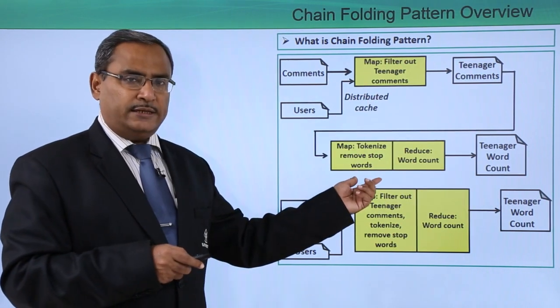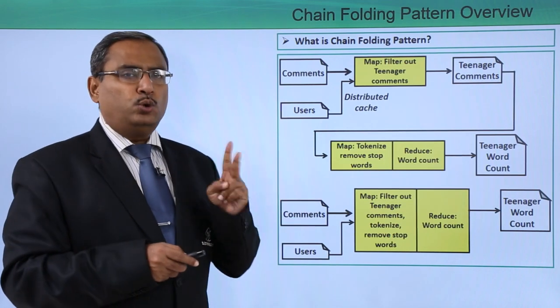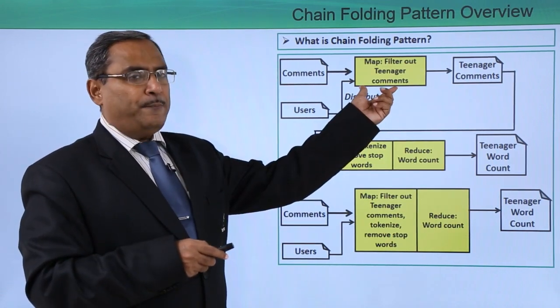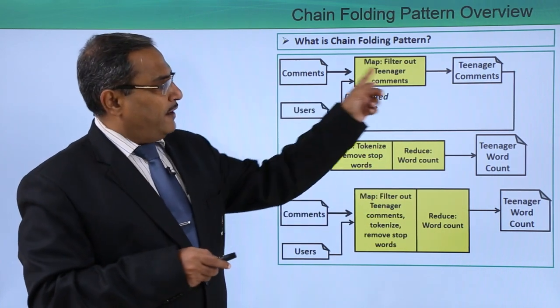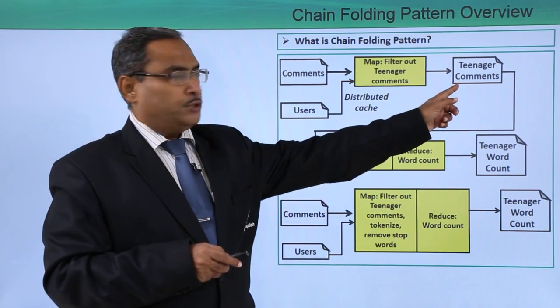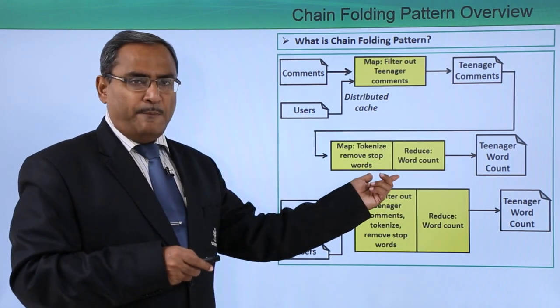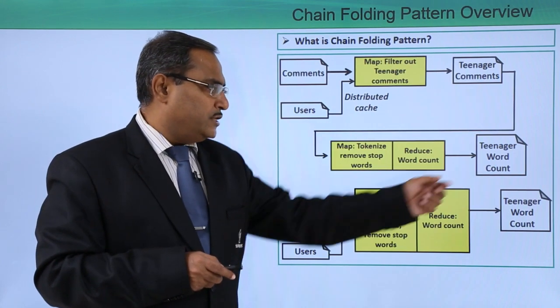How many tasks are there in this particular map reduce chain job? Here we are having two tasks. There is a task number one, map reduce task number one and this is task number two. Here you can find that we are having data flow in this chain. Its output will be taken as input for this map reduce task and then the final output will be obtained, that is teenager word count.